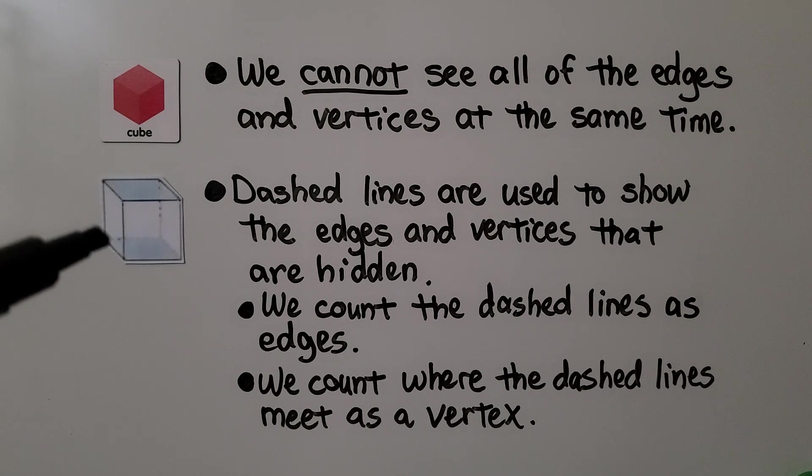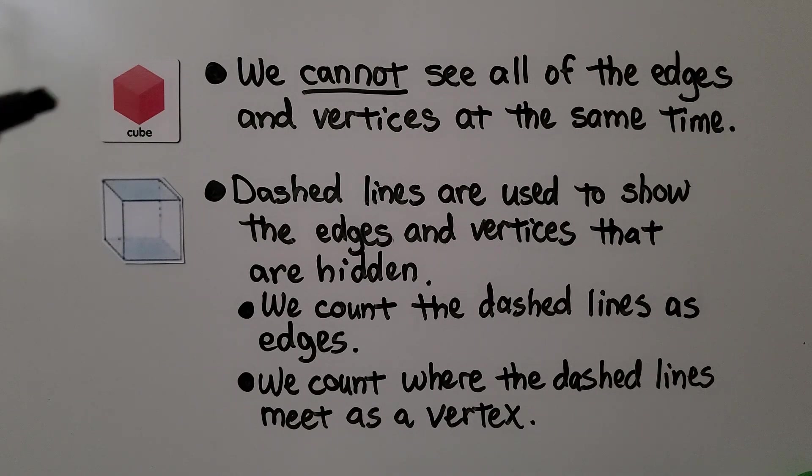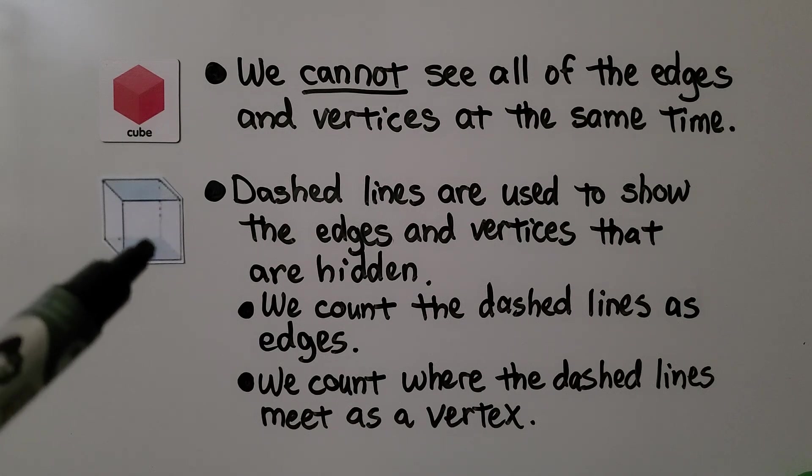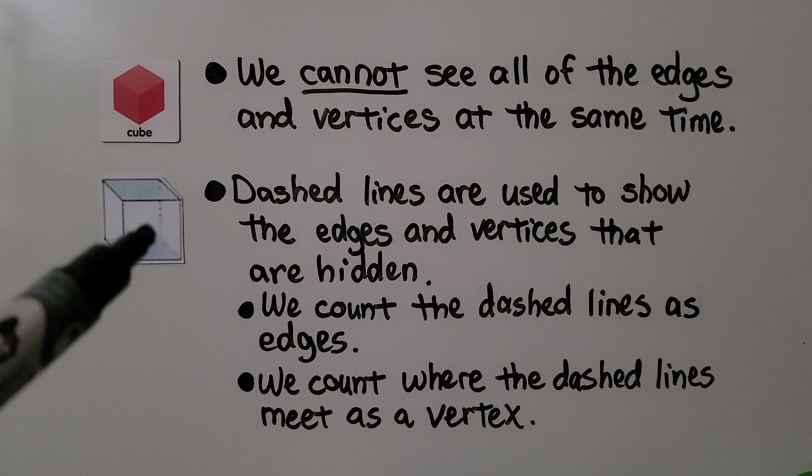So we have a dashed line coming back here to show the back part of the cube that's hidden. We have another one here and we have another one coming up and we have vertices here where they meet.